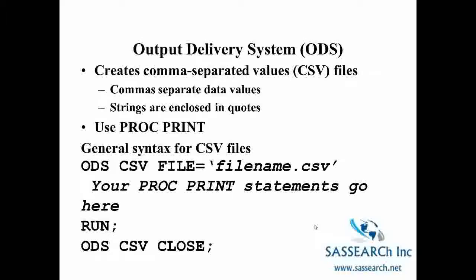Using the Output Delivery System, ODS, I am going to talk specifically about how we can create comma separated or CSV files. The commas separate the data values, and strings are going to be enclosed in quotes. To do this with ODS, we make use of PROC PRINT. The general syntax is ODS CSV, then FILE equals with the file directory and file name with the extension CSV, followed by PROC PRINT statements, a RUN statement, and then ODS CSV CLOSE. This is very similar to the ODS code we've used earlier in the class when we created RTF files, except now we're actually going to be creating a data set.